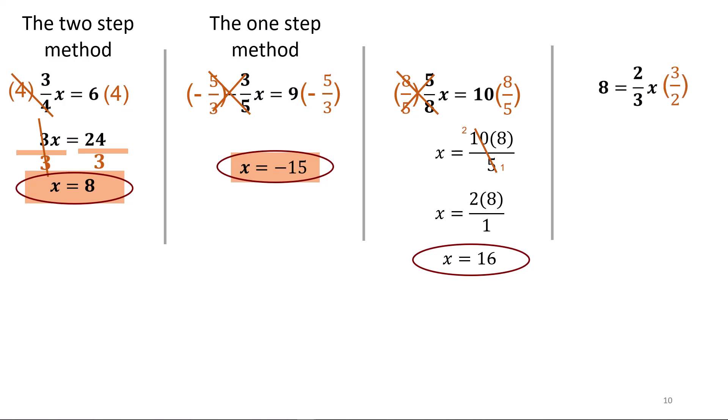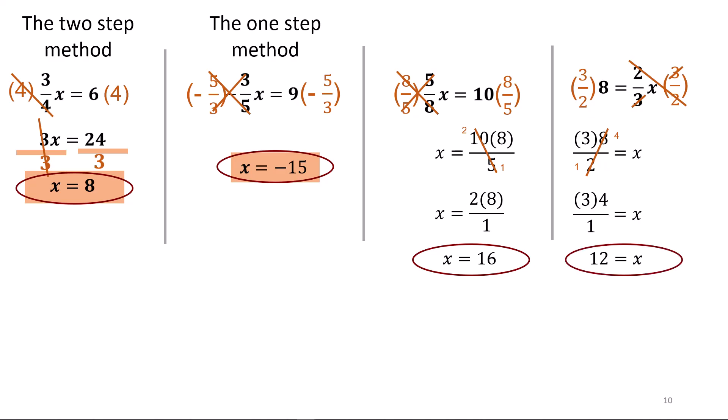In the final equation, we multiply both sides by 3 over 2. We cancel on the right and work it out on the left: 3 times 8 over 2. The 8 and 2 reduce to 4 and 1, and then 3 times 4 is 12, the final answer.